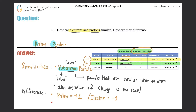Another difference is where they're located. Electrons are always located outside the nucleus, and protons are always located inside the nucleus. So that's a clear distinction as well. Protons are in the nucleus, while electrons are not allowed in the nucleus — electrons are always found outside the nucleus.